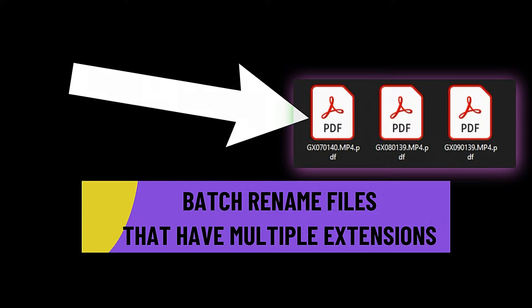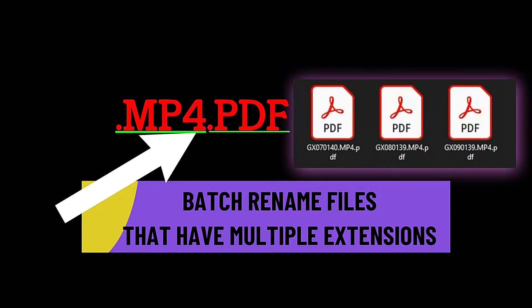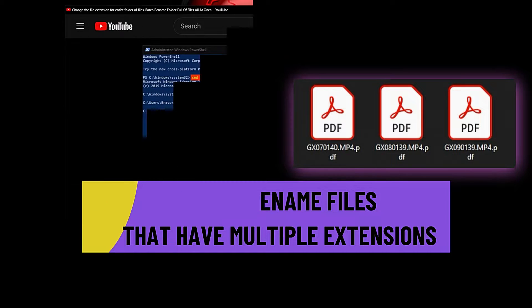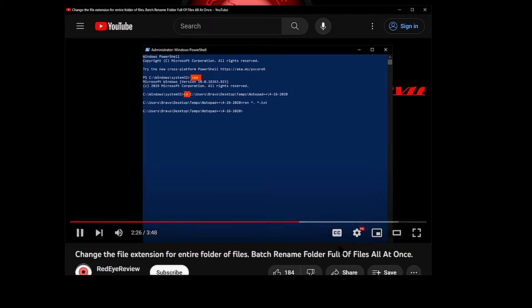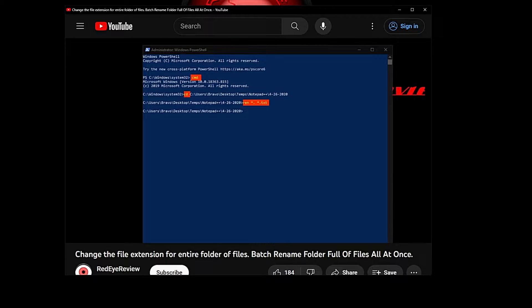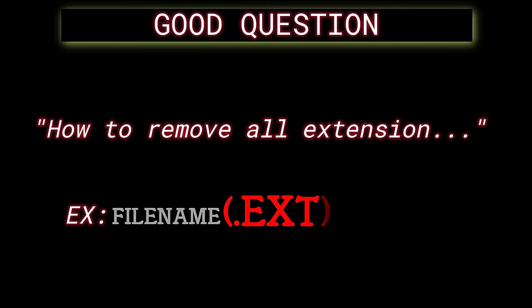Batch renaming a folder full of files that have dual extensions in Windows. We had a comment from a previous video where we walked through this originally, and we're going to link that video in the top right of this video if you want to check that out as well. Someone asked: what happens if they have a folder full of files that have dual extensions? How do they rename those files? So today we're going to walk through that.